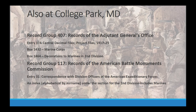Also at College Park, in Record Group 407 — Records of the Adjutant General — under the central files section, there are files specifically for the Marine Corps and a section on decorations for the Second Division. In Record Group 117 — Records of the American Battle Monuments Commission — there is correspondence with officers from the Second Division, including marine officers.